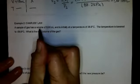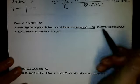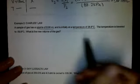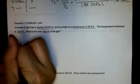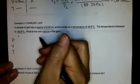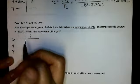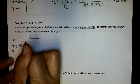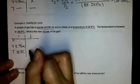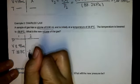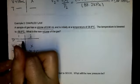Charles Law, we have a sample gas of the volume of 8.98 milliliters at a temperature of 38 degrees Celsius. My temperature is lowered to negative 39.9. What's the new volume? So again, I have pressure, volume, and temperature, initial conditions, and final conditions. I have initial volume of 8.98 milliliters. Initial temperature of 38.8 degrees Celsius. Temperature is lowered to negative 39.9 degrees Celsius. I want to know my new volume. My pressure did not change.